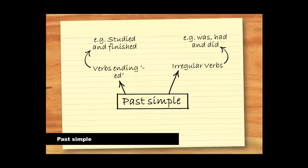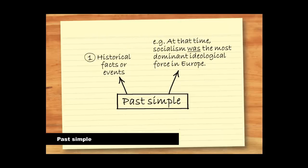Now let's look at the past simple. By past simple tense, we mean verbs that indicate completion. Often these end in ED, but also there are irregular verbs. This tense has a number of uses. Firstly, we use the past simple when we state historical facts or analyze historical events.